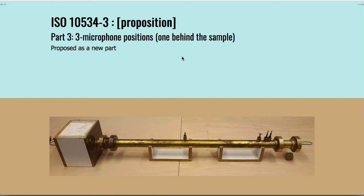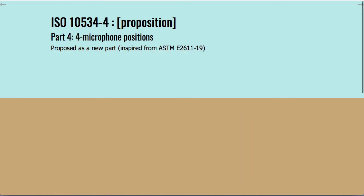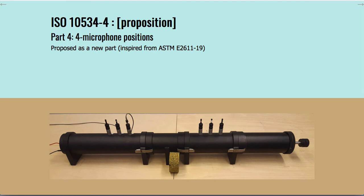Currently there is a proposition for a Part 3 of ISO 10534 using three microphone positions — exactly as just described, with a third microphone position behind the sample inside the impedance tube. There will also be a proposition for a Part 4 using four microphone positions: two microphones in front of the porous sample and two behind it. This configuration allows measurement of both Rho and K and also the transmission loss, as described in ASTM E2611 revised in 2019.